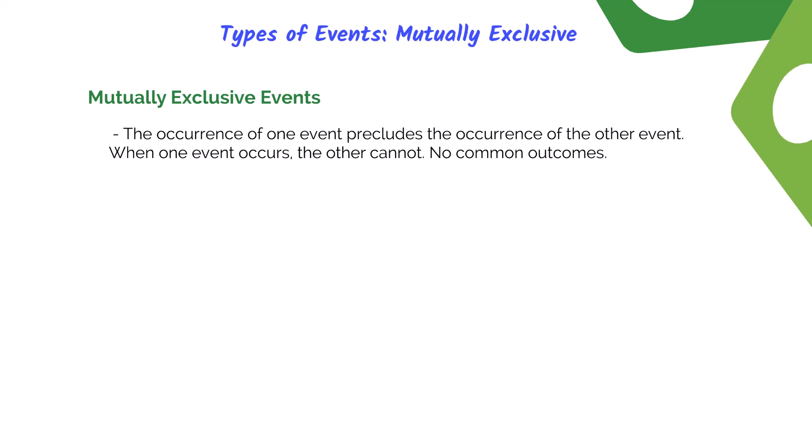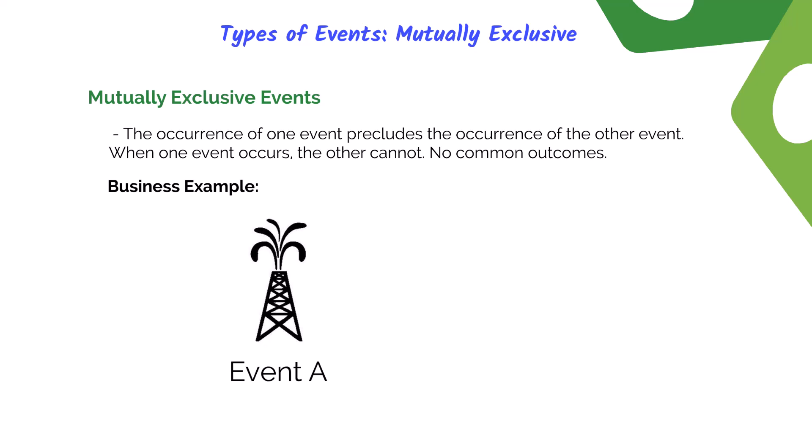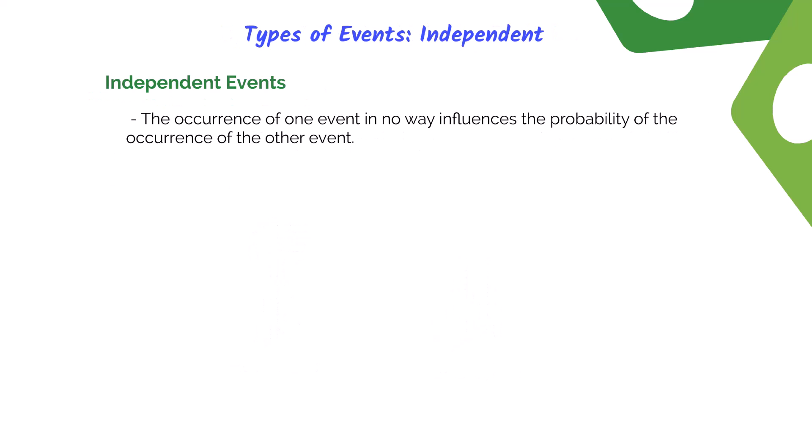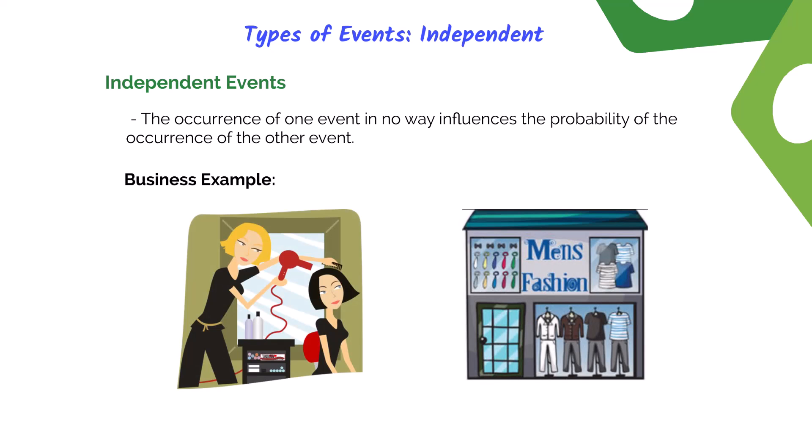It's important to understand the types of events. The first is mutually exclusive events — where one event cannot happen at the same time as another, meaning there's no common outcomes and no overlap. For example, if you're drilling an oil rig, either you strike oil or you don't — you can't have both happen at the same time. Another type is independent events, where one event in no way influences the occurrence of another. For example, whether a fashion salon in Chicago will be successful has no influence on a men's fashion store in San Francisco — these are completely independent events.